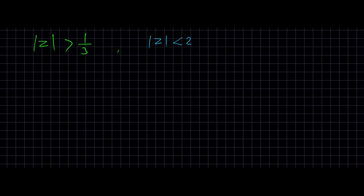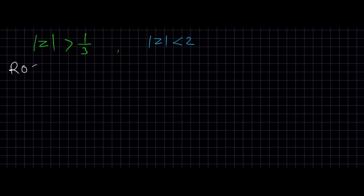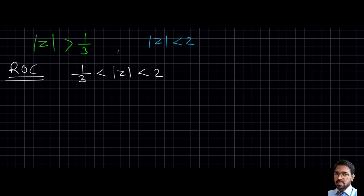So we have: first, magnitude of z should be greater than 1/3; and second, magnitude of z should be less than 2. Therefore the region of convergence is 1/3 < |z| < 2. Let us plot the region of convergence.